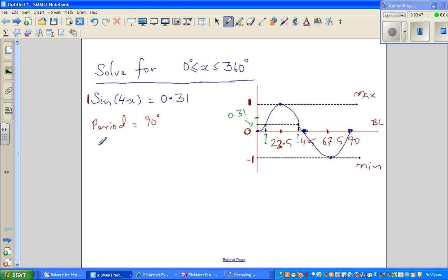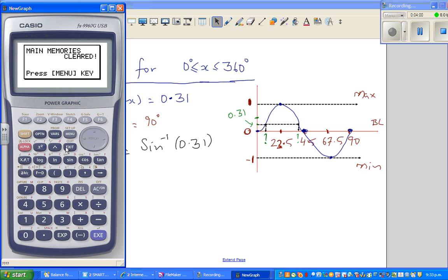So we do the same way. 4x, or your reference angle 4x is sin inverse of 0.31. So where's my calculator?